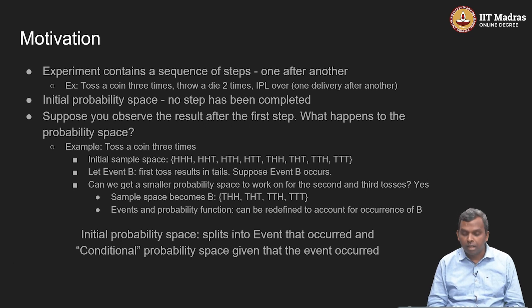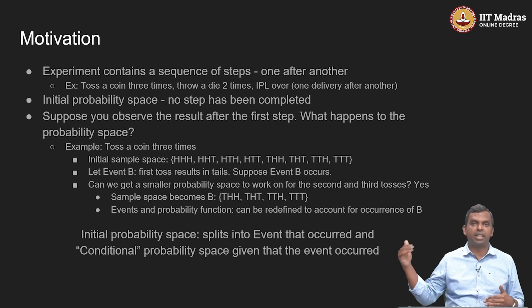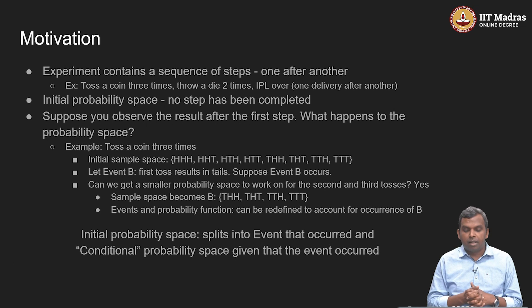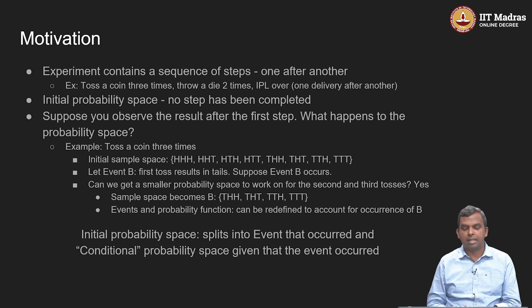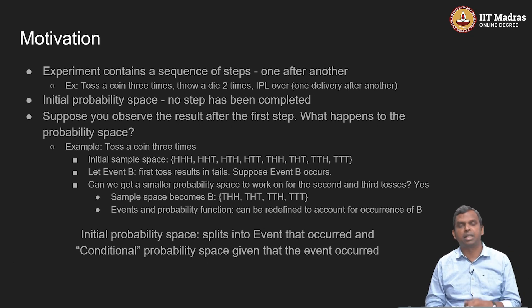Toss a coin three times. The initial sample space has eight different possibilities — from HHH to TTT, all eight possibilities are there. Now, if you focus on the first toss and define an event B as the first toss resulting in tails, let us say we observed event B. We observed the first step in the experiment — somebody has told us event B has occurred.